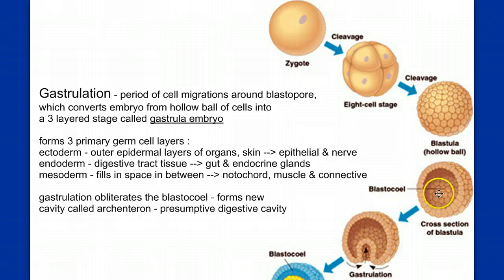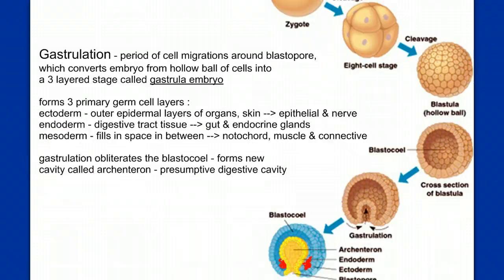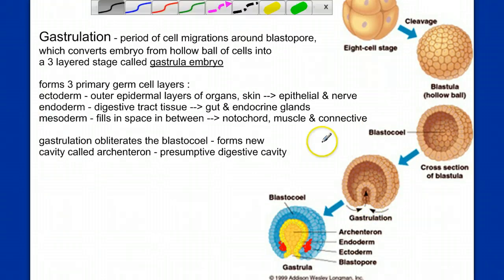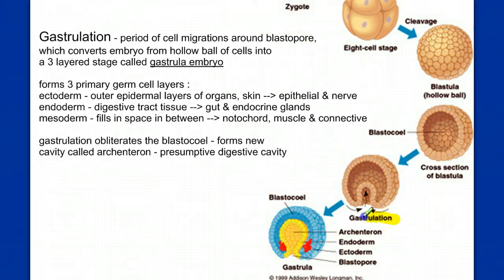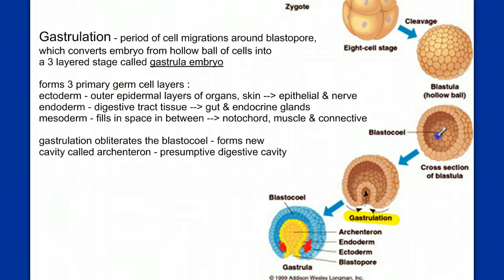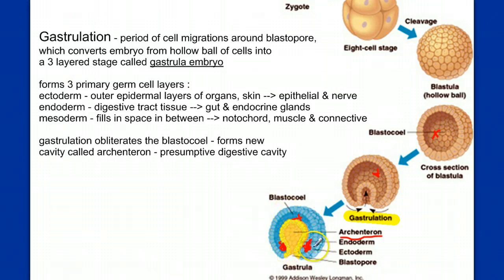The blastula is three-dimensional; in cross-section it is hollow, with an inner space called the blastocoel. At some point, the blastula rolls in on itself in a process called gastrulation. This creates two germ layers and a new body cavity. The blastocoel still exists, but folding inward creates a new cavity called the archenteron — our primitive gut, the beginning of the digestive system. This produces an inner layer, the endoderm, and an outer layer, the ectoderm.